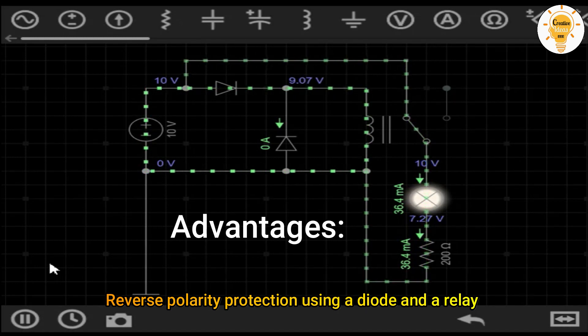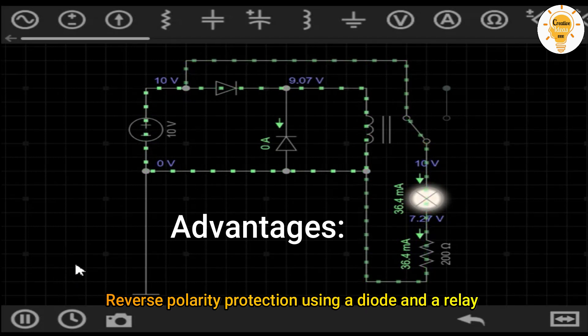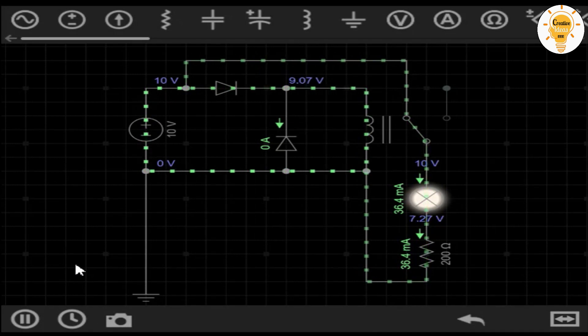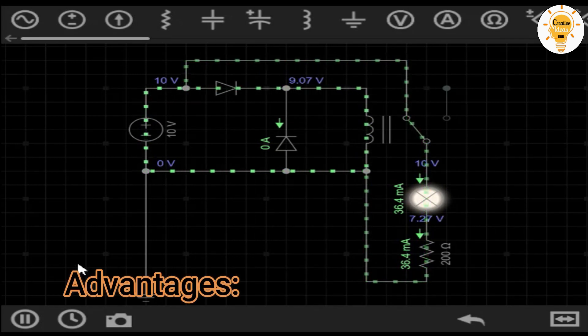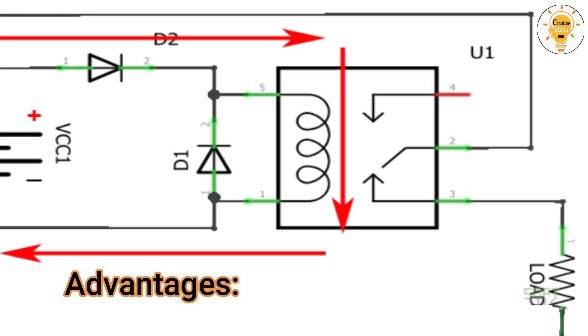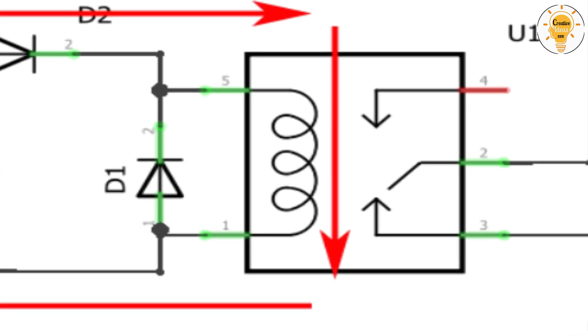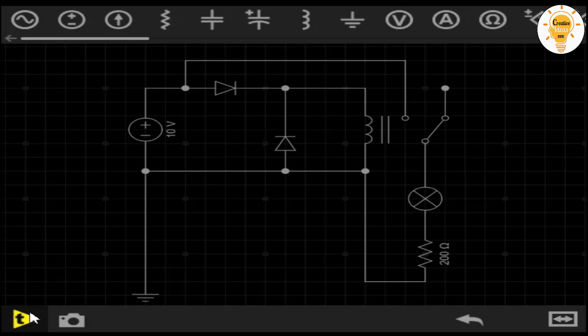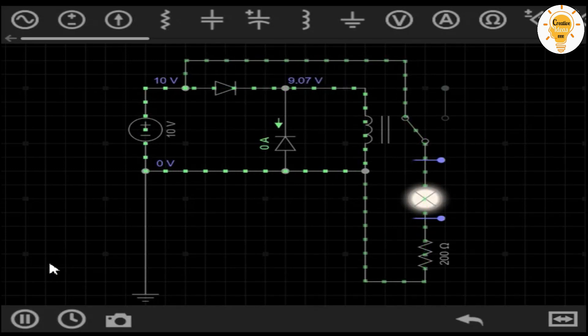Advantages: No voltage drop between source and load. Supported current is only limited by the relay used, so it supports much higher currents. The diode only has to support the relay load, so it will not dissipate as much heat. The idle circuit is open, so there is no conduction at any time when reversed. Components are not damaged if the source is reversed.